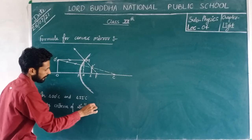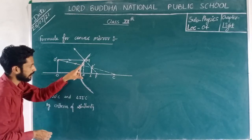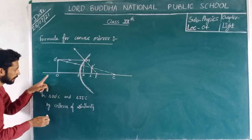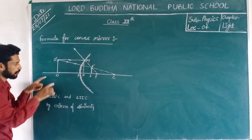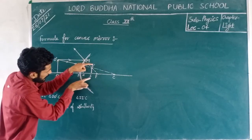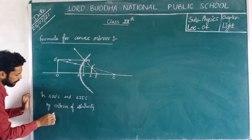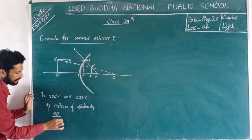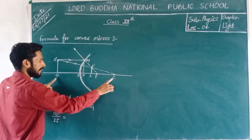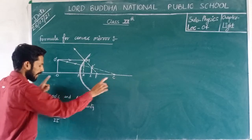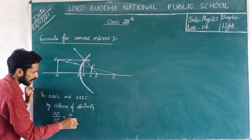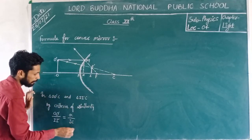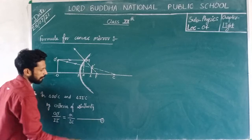So by the criteria of similarity, the corresponding side ratio is: OO dash divided by II dash equals OC divided by IC. Suppose that this is equation number 1.